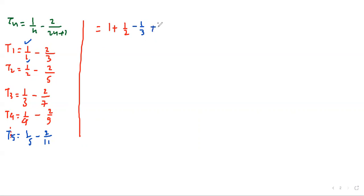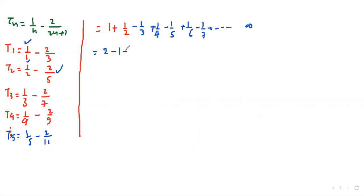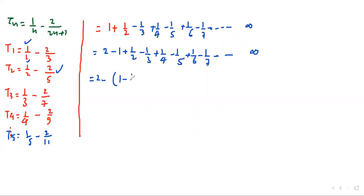Adding all terms together, the sum simplifies to 2 minus (1 - 1/2 + 1/3 - 1/4 + 1/5 - 1/6 + 1/7 ...) which gives us 2 minus (1 - 1/2 + 1/3 - 1/4 + 1/5 - 1/6 + 1/7 ...) up to infinity.